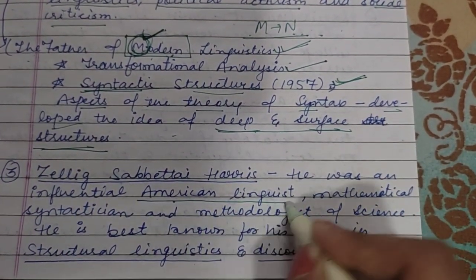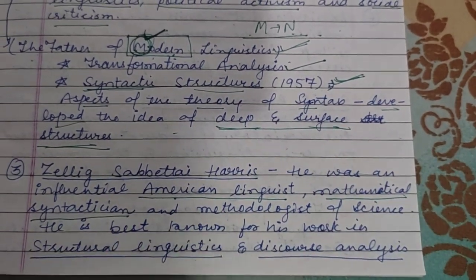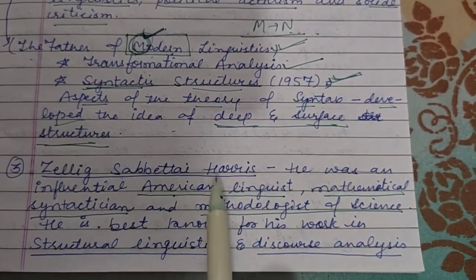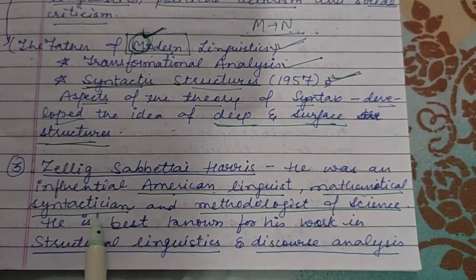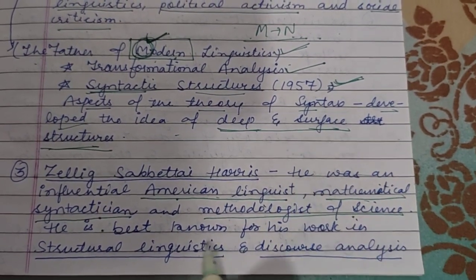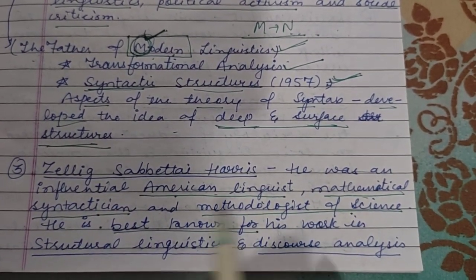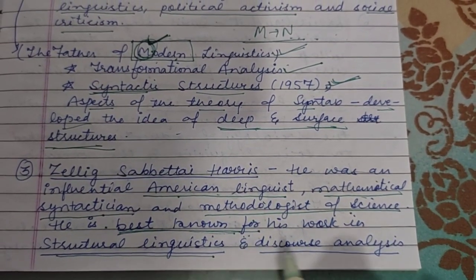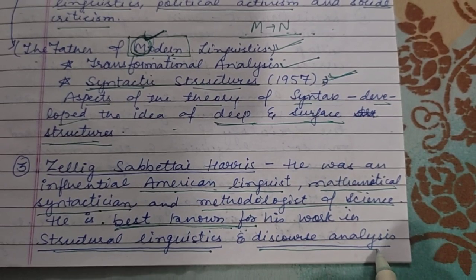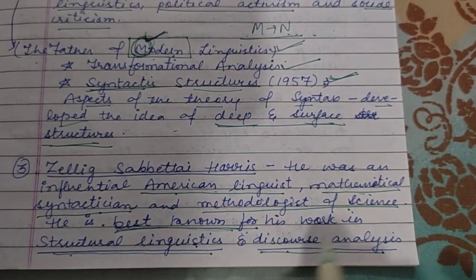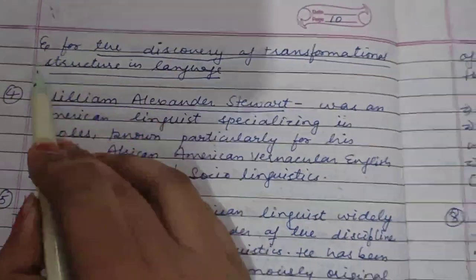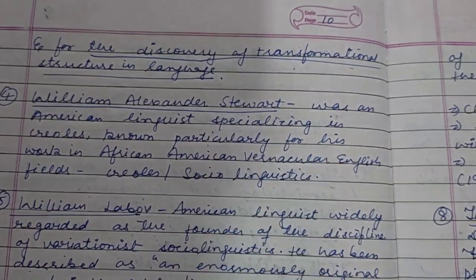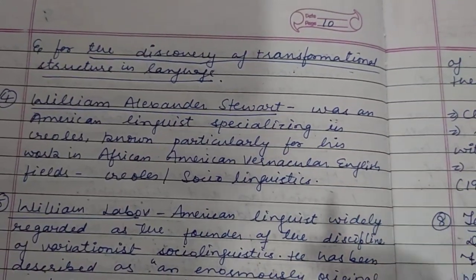Next we have Zelig Sabatai Harris, who is an American linguist, Mathematical Syntactician, and Methodologist of Science. He is best known for his work in Structural Linguistics and Discourse Analysis, and for the discovery of transformational structure in language.